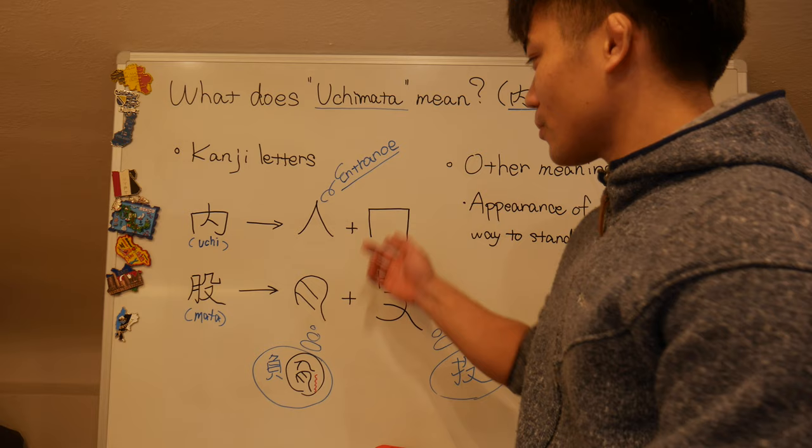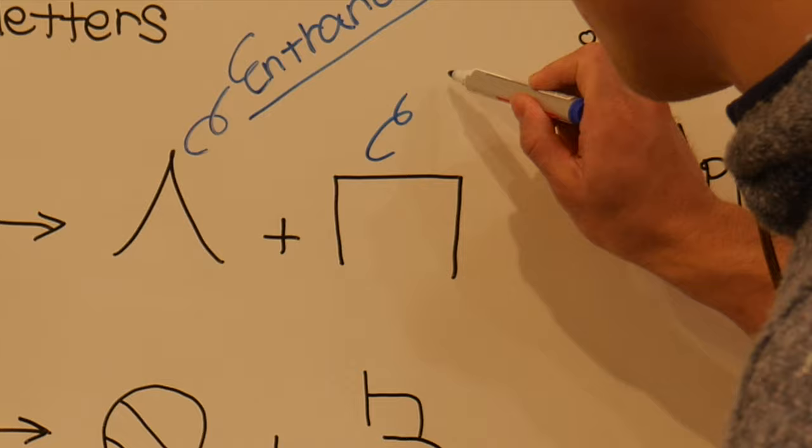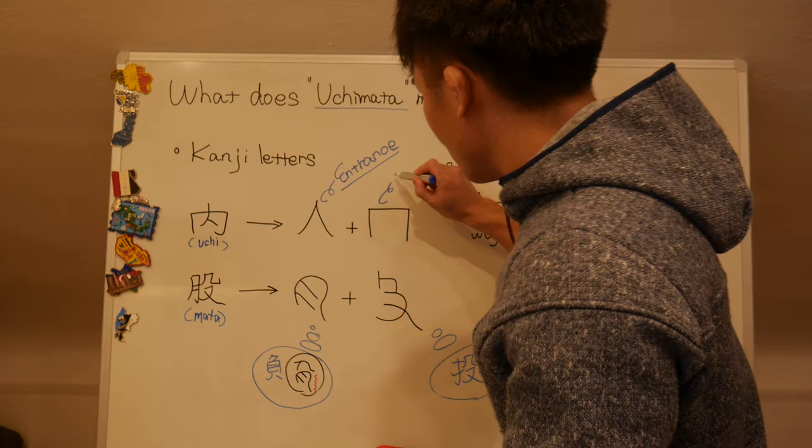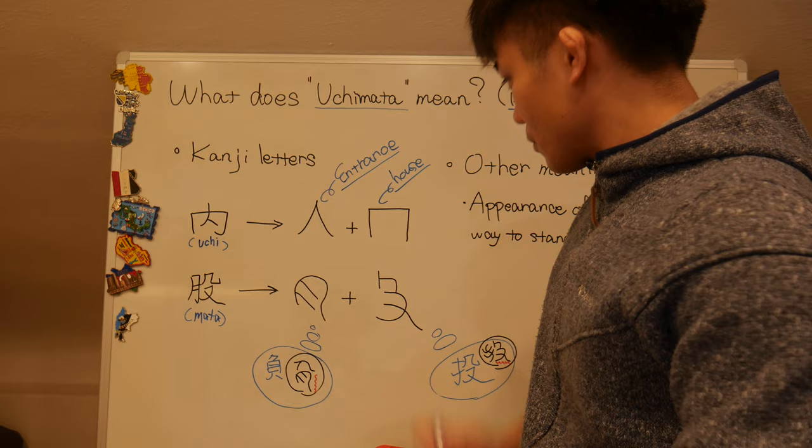And then the second one, now it gets easier. It looks like just a building. So this is, let's say building, or house.